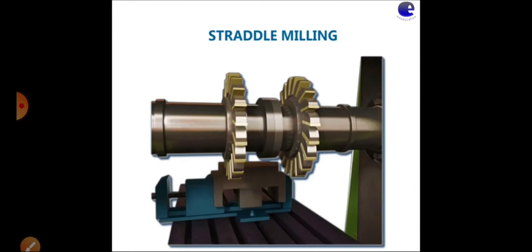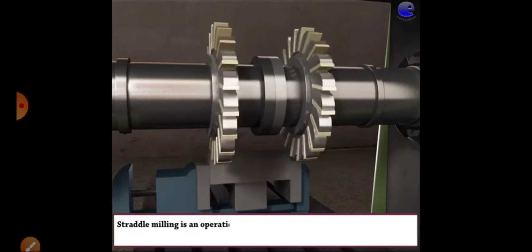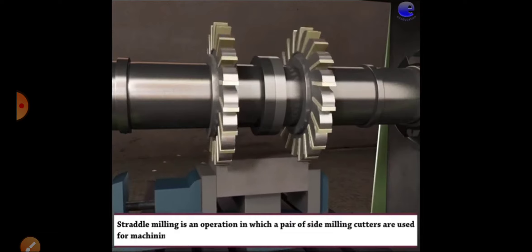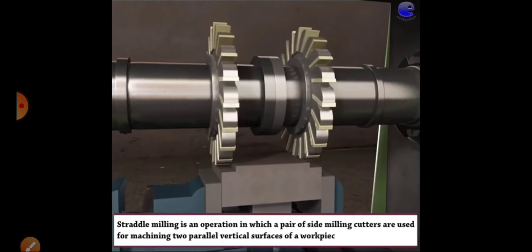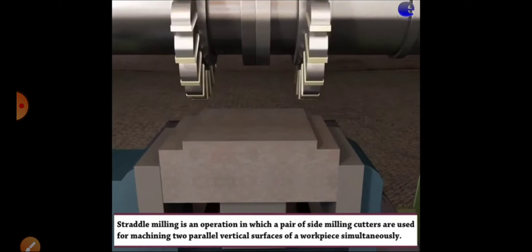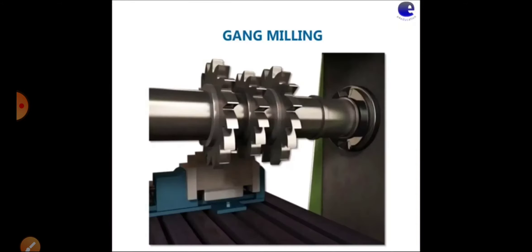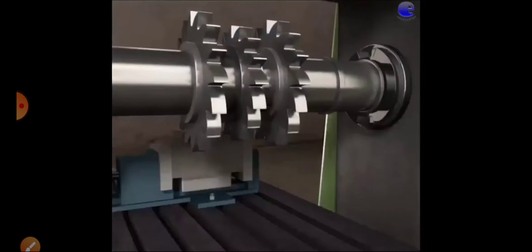After face milling, the next operation is straddle milling. Two cutters are fastened parallel to each other with the help of spacers or collars. The work piece is held in the machine vise. Here we are squaring the work piece with the cutters. The component moves with the help of the work table. The vise is held with the help of T-slots. This is the straddle milling operation with side milling cutters.